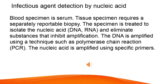Infectious agent detection by nucleic acid: Blood specimen is serum; tissue specimen requires a separately reportable biopsy. The specimen is treated to isolate the nucleic acid — DNA, RNA — and eliminate substances that inhibit amplification. The DNA is amplified using a technique such as polymerase chain reaction (PCR). The nucleic acid is amplified using specific primers.